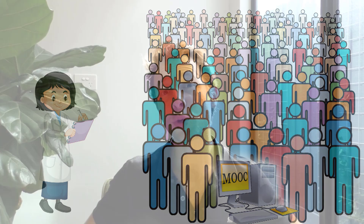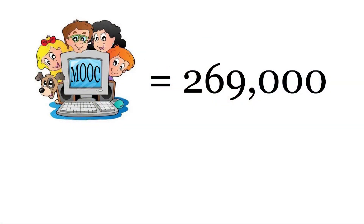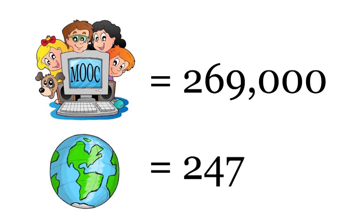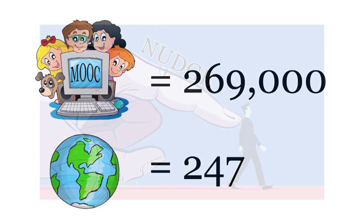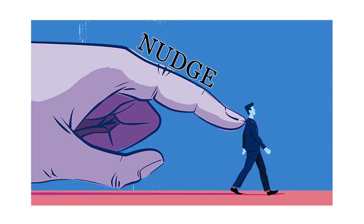Over the course of two and a half years, every online course offered by Harvard, MIT, or Stanford included one of these behavioral science interventions at the beginning of the course. To give you some numbers: 269,000 students enrolled from 247 different countries. This was a huge subject pool to test whether behavioral science could get people to finish their online learning.